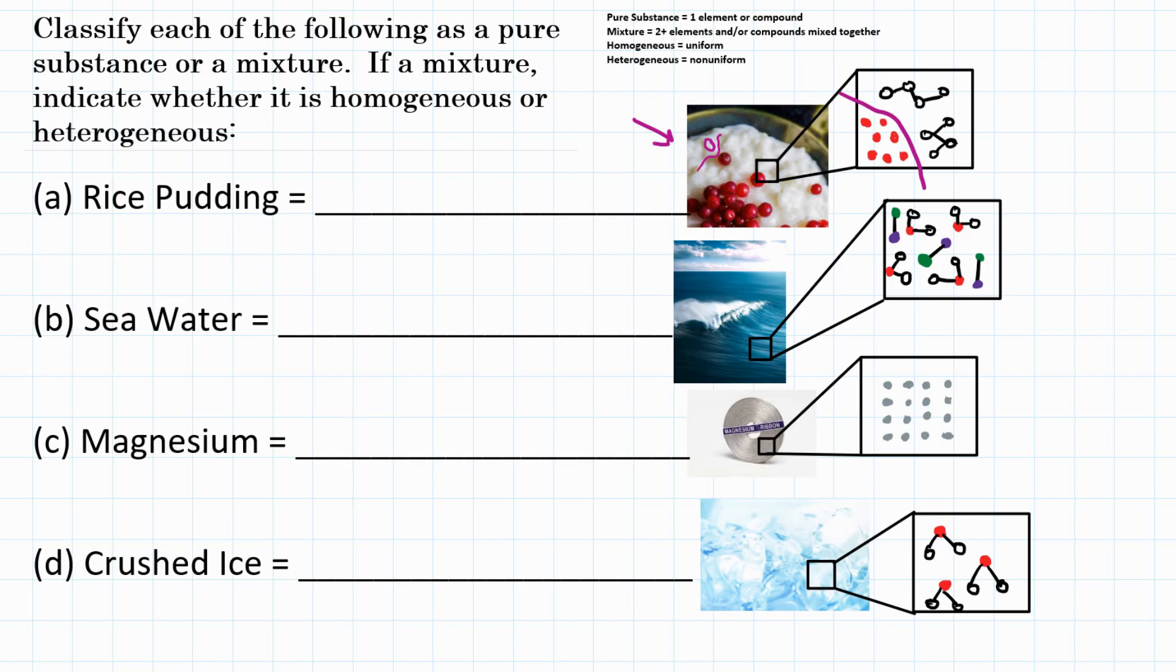That means that it's not evenly mixed. It's not uniform. And that again would say that this is a heterogeneous mixture. So rice pudding is a heterogeneous mixture.